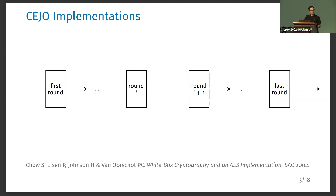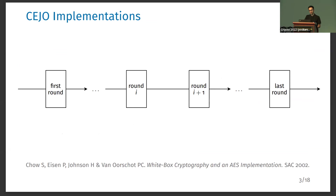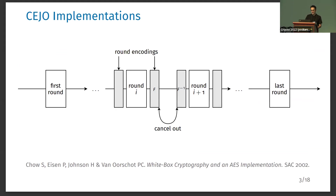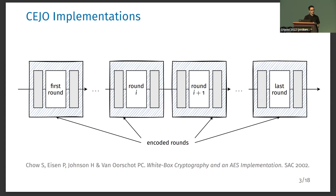The first white box implementation of a block cipher proposed was a white box implementation of AES by Chow and others. Since then, many implementations have been proposed, but mostly all of them are based on the same idea — these are called CD implementations. The idea is that the cipher is decomposed into rounds, and in each round we introduce random permutations called round encodings. To cancel the effect of these encodings, the input encoding of the next round is chosen as the inverse of the output encoding of the previous round, and the round encodings are merged with the round function to create the encoded round functions.